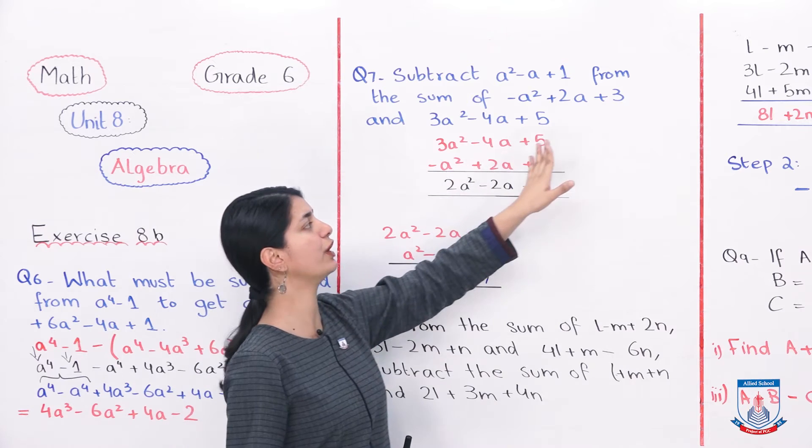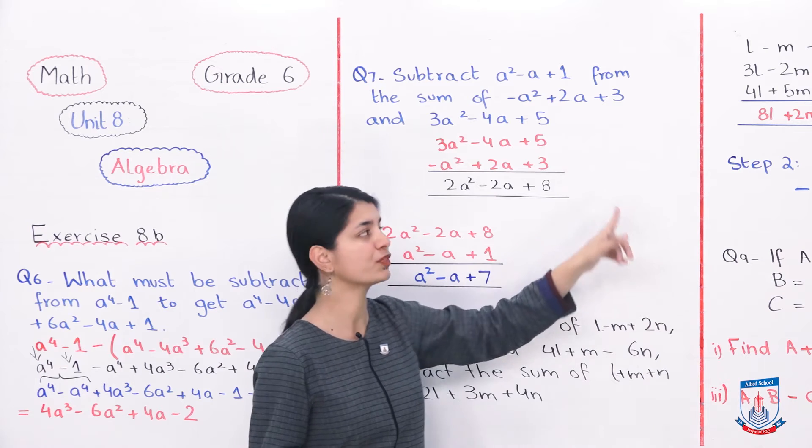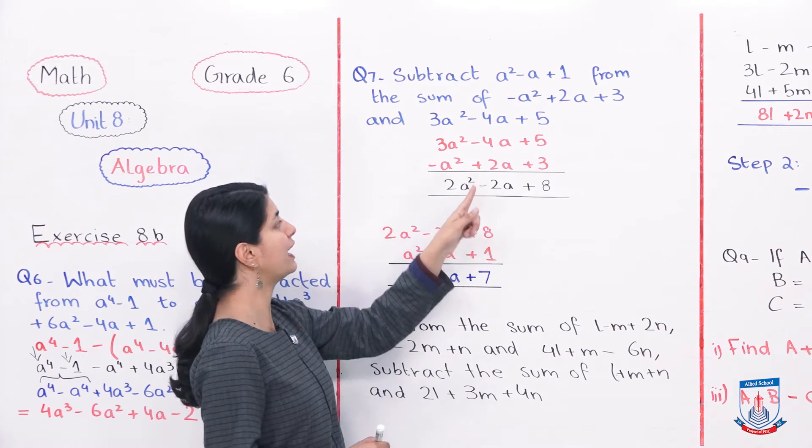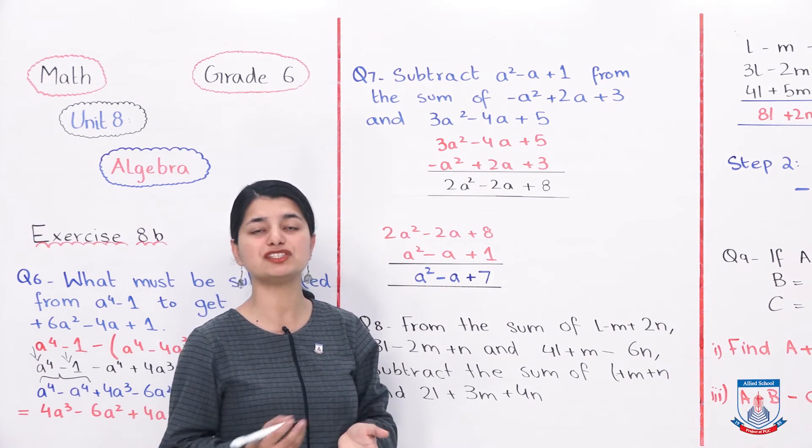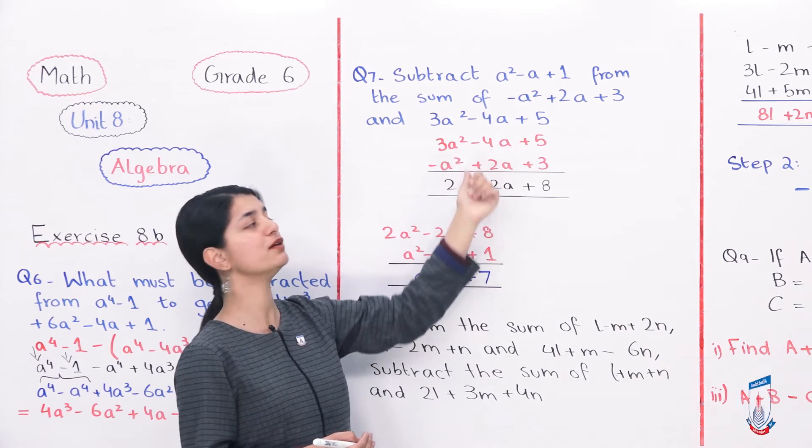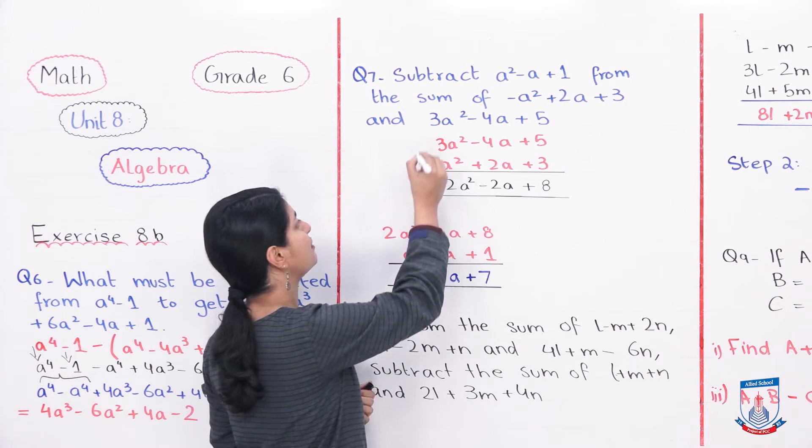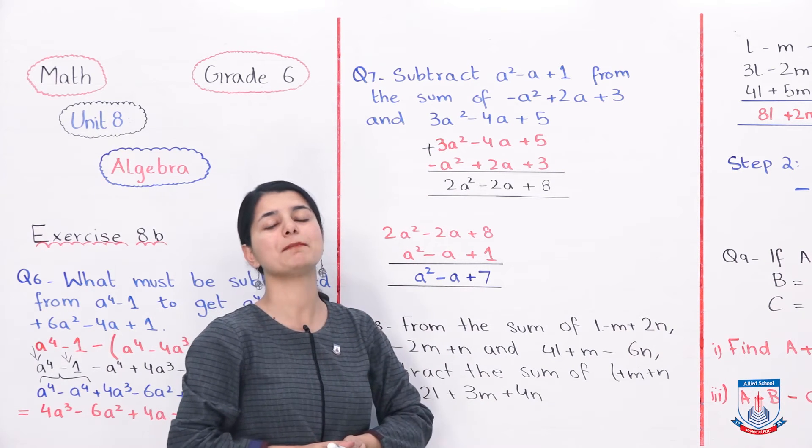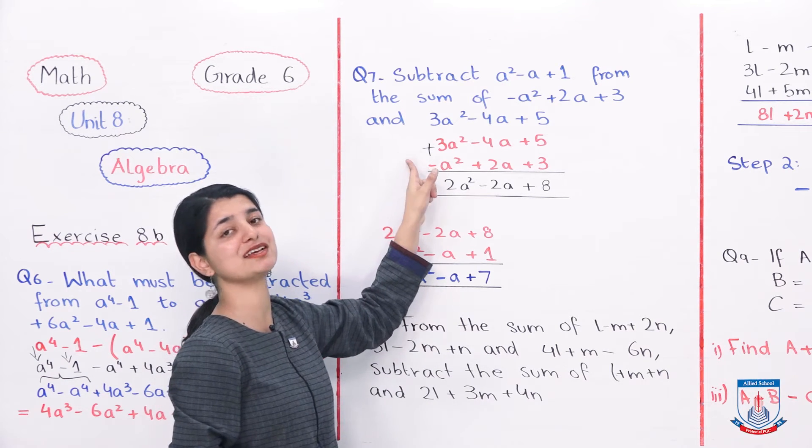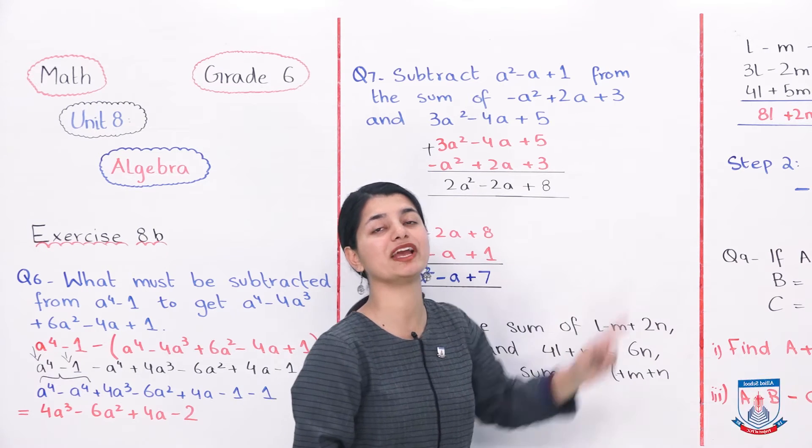So we have written 3A^2 minus 4A plus 5 and minus A^2 plus 2A plus 3 and we added them. Plus sign is with both, both will be added. 5 plus 3 is 8. Next we come. Minus and plus means minus, both signs are different. 4 minus 2 gives us 2A. And because the bigger number is 4, which has the minus sign with it, below we get minus 2A. Lastly, these two are also plus and minus. So you will do 3A minus A is 2A and your sign will remain positive. Because 3 here is the bigger number, which has the positive sign. So you write 2A^2 minus 2A plus 8. This is your sum of both expressions.